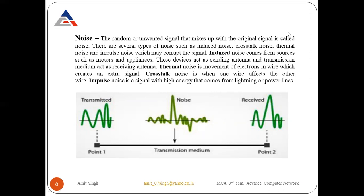When noise combines with your signals, it affects the signal quality. Looking at the diagram, the transmitted signal at point P1 travels through the transmission medium. Some outer noise — whether induced, thermal, crosstalk, or impulse — combines with the signal. At the receiver side, the signals are very different from the signals that were present at the sender side.